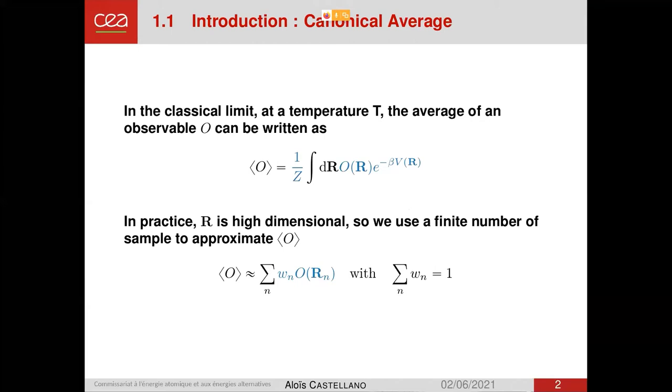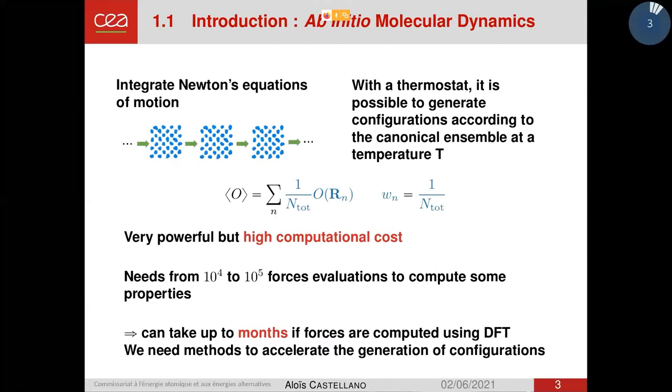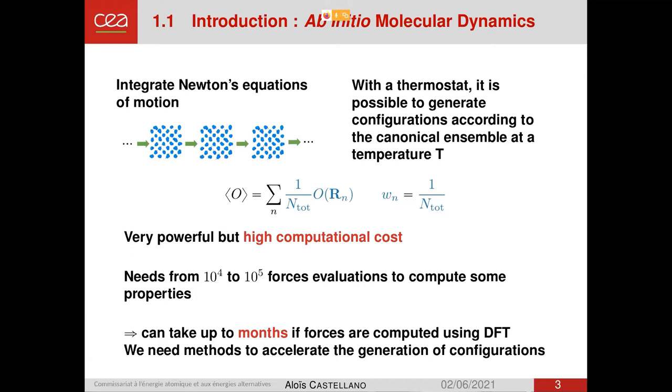In an ab initio setting, the most used method to do this is ab initio molecular dynamics. So it's very simple in the sense that we just integrate Newton's equation of motion, and if we add a thermostat to those equations, it's possible to generate configuration according to the canonical ensemble at some temperature. And in the end, our average is just an arithmetic mean over the property you want to compute. It's a very powerful method, but it has a very high computational cost. For some quantities and properties, we need from thousands to tens of thousands of forces evaluations. And if we do this using DFT to compute the forces, it can take up to months or even be unreachable for some systems. So we need methods to accelerate the generation of those configurations.